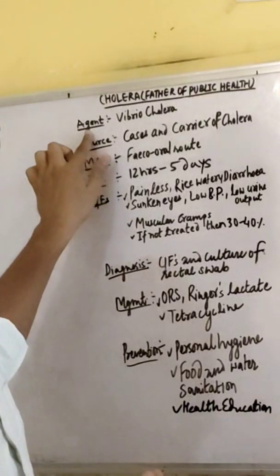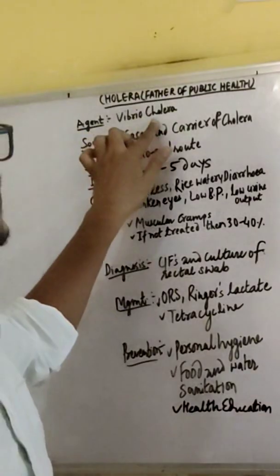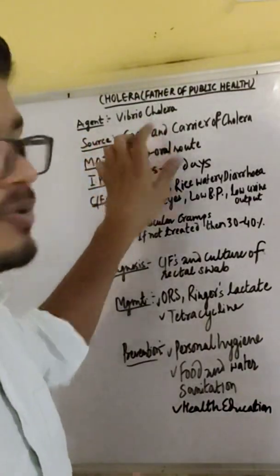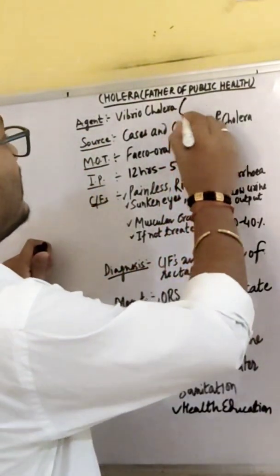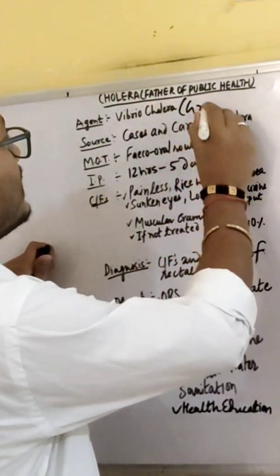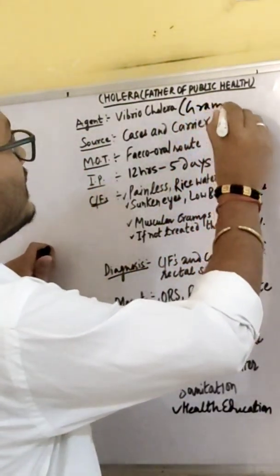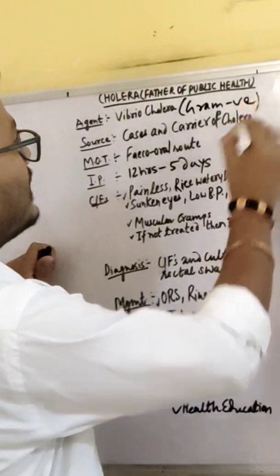So what is the agent of Cholera? Vibrio Cholera, which is a gram negative bacteria.